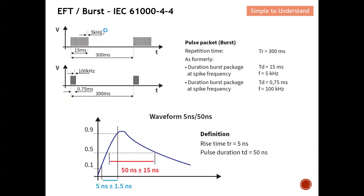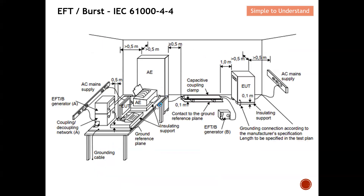To revisit: we have the 5 kHz type and the 100 kHz type. Zooming into one of the pulses, this is what we call the rise time — it needs to be under 5 nanoseconds. We also have the pulse duration of plus or minus 15 nanoseconds. These pulses are sent in a repetitive manner at either 5 kHz or 100 kHz intervals to test your DUT.